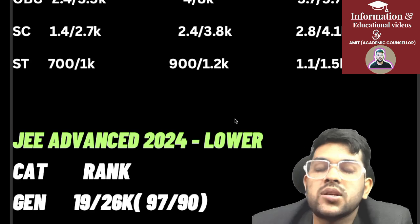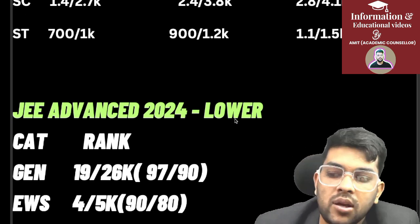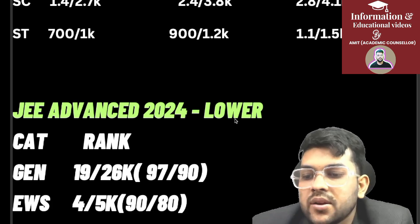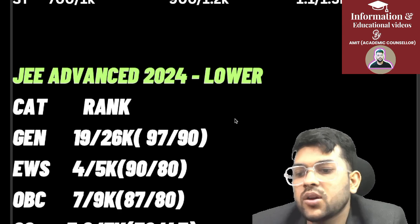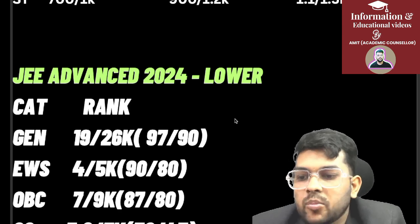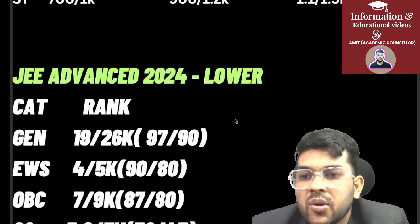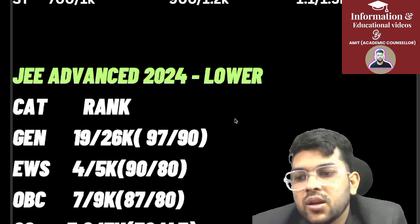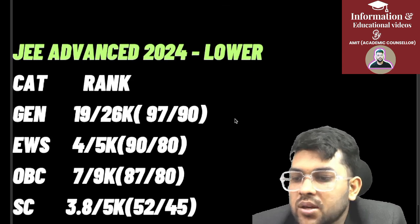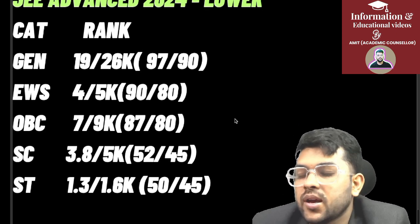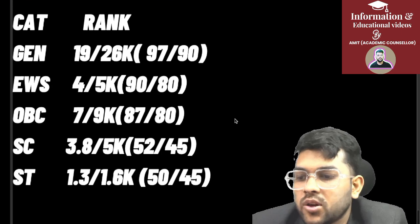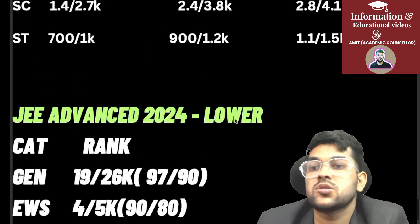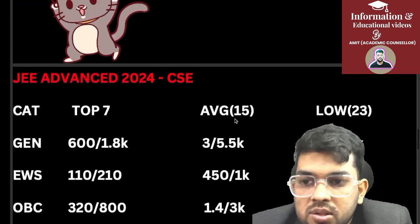For the minimum rank to get any IIT seat with any branch: General male — rank 19,000, marks required ~97; General female — rank 26,000, marks ~90. EWS: male — 4,000, female — 5,000. OBC: male — 7,000 (marks ~87), female — 9,000 (marks ~80). SC: male — 3,800, female — 5,000 (marks 52/45). ST: male — 1,300, female — 1,600 (marks 50/45).